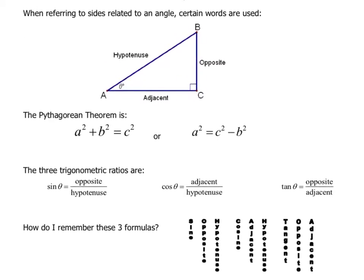When we refer to a specific angle, we use certain words to talk about the sides. The hypotenuse is always the hypotenuse — that's the longest side of a right triangle. The opposite side is opposite a particular angle, like angle A, and the name for the opposite changes depending on which angle we're talking about. The adjacent is the side that is adjacent to angle A.